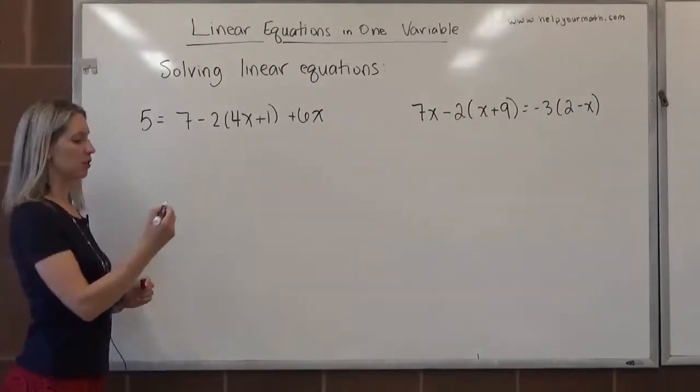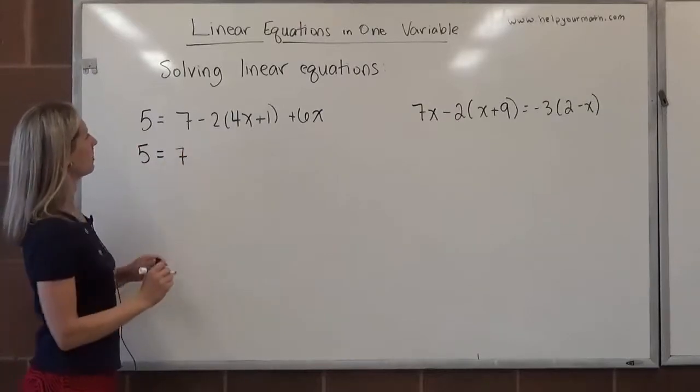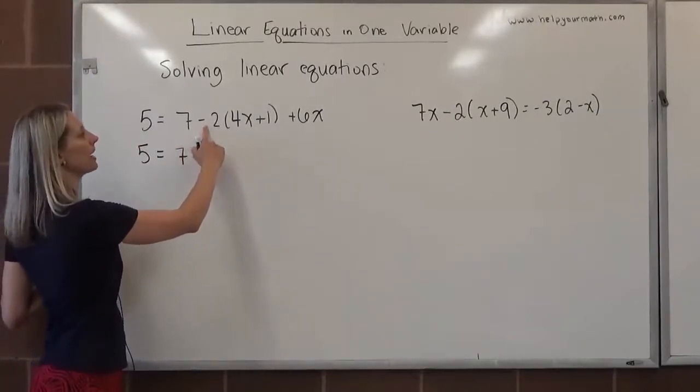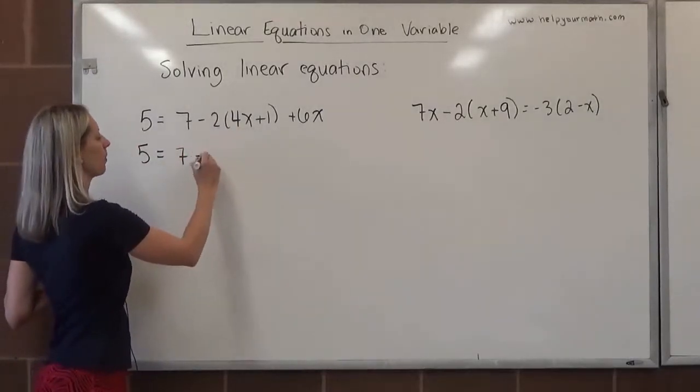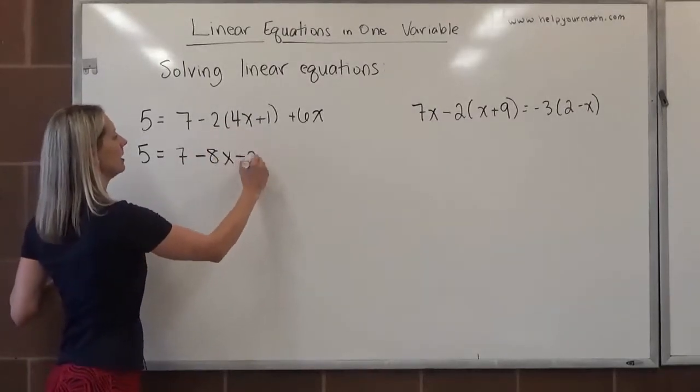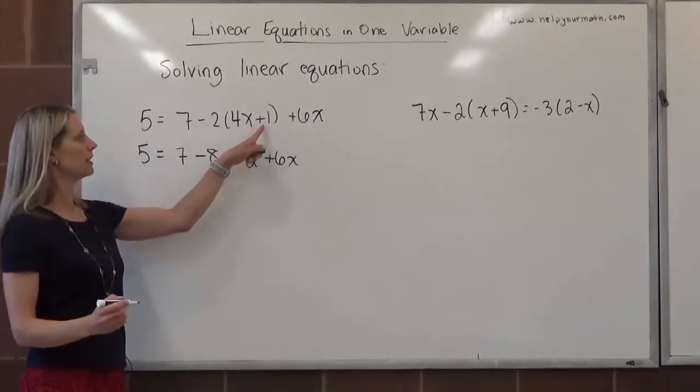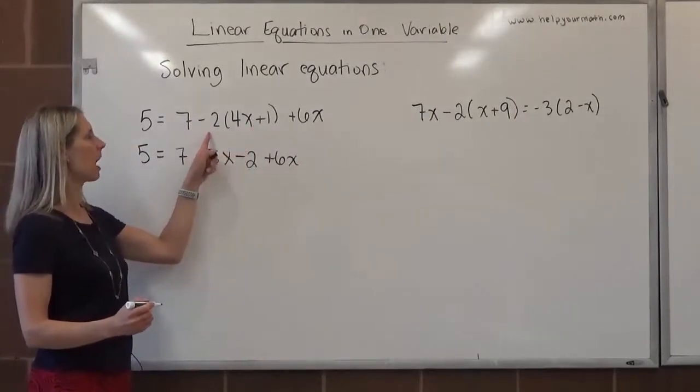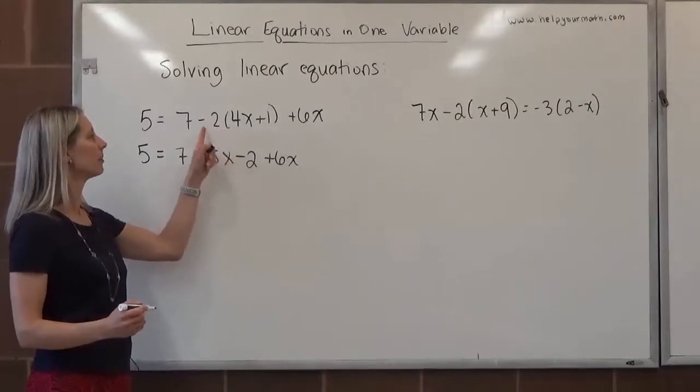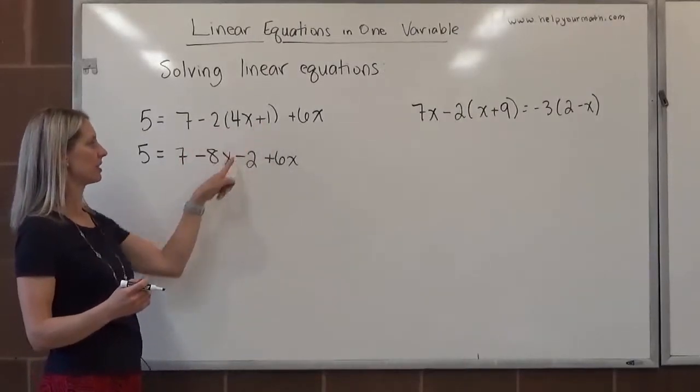First I see parentheses, so I'm going to use the distributive property. We'll rewrite 5 equals, the 7's not affected, so it's going to be 7. We're going to distribute the negative 2. Negative 2 times 4x is minus 8x. Negative 2 times 1 is negative 2, and then plus 6x. Don't lose that negative when you distribute. It's very common that we just assign that negative to the first number. It belongs to the part that's being distributed, so we want to make sure that we change the sign here.